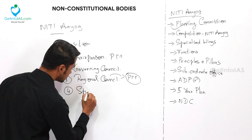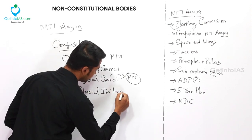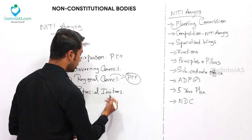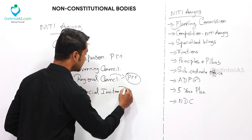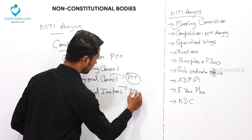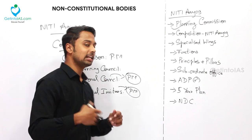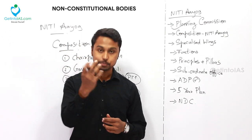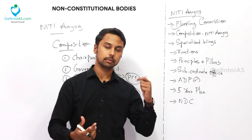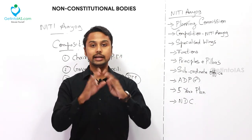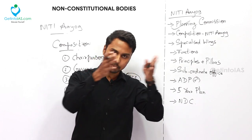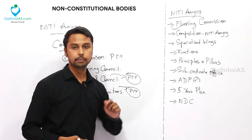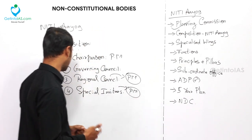Fourth is the Special Invitees. There is no maximum number for Special Invitees; the government can nominate anyone. Special Invitees are nominated by the Prime Minister and are experts with practical knowledge in planning — similar to the four to seven experts in the Planning Commission.